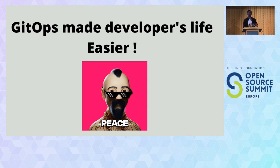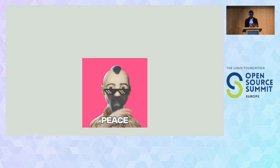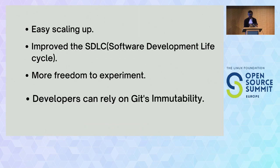How has GitOps made the developer's life easier? Obviously it has made developer life easier — it scales up automatically and it improves the software development lifecycle. It gives more freedom to developers to experiment while releasing new software. Developers can rely on Git's immutability.